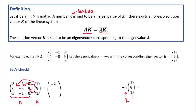From the second row we get negative 45 plus 9, which is negative 36. Finally, to obtain the last element, we multiply the vector by the third row of the matrix, giving us 5 minus 9, which is negative 4.